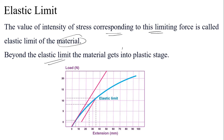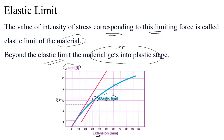Beyond the elastic limit, the material enters the plastic region. Looking at a graph of extension versus load, as load increases the extension increases up to a particular point. Beyond that point the material undergoes plastic deformation. The point at which the maximum stress a material can withstand is called the elastic limit, and beyond it is the plastic stage.